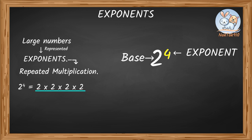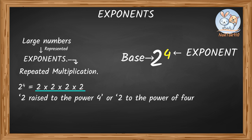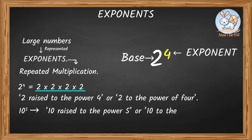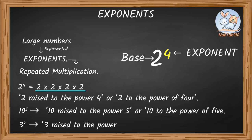How do we read these numbers? 2 to the power of 4 is read as '2 raised to the power of 4,' or '2 to the power of 4.' Let's try more: 10 to the power of 5 is read as '10 raised to the power of 5,' or '10 to the power of 5.' 3 to the power of 7 is read as '3 raised to the power of 7,' or '3 to the power of 7.'